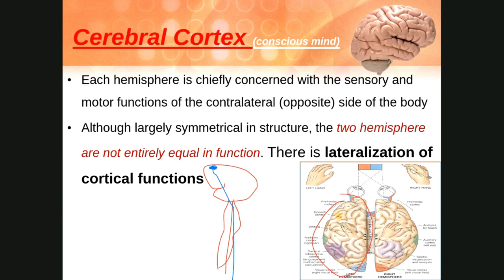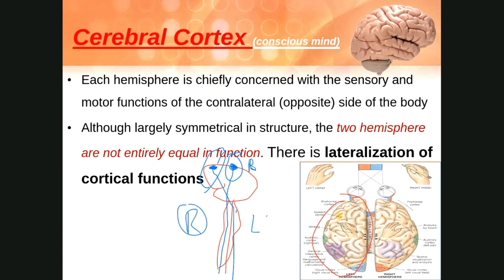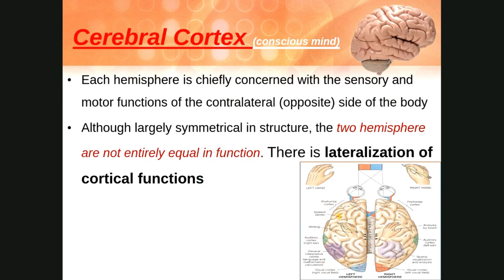When there is damage to the right side brain, the left body gets paralyzed; when the left brain is damaged, the right body gets paralyzed — this is lateralization. Approximately 85% of fibers cross to the opposite side and 15% travel on the same side of the spinal cord.